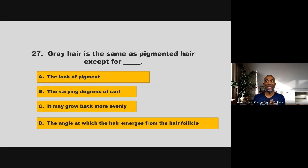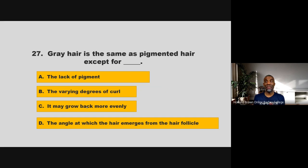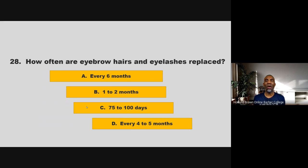Gray hair is the same as pigmented hair except for blank. Is it the lack of pigment, the varying degrees of curl, it may grow back more evenly, or the angle at which the hair emerges from the follicle? If you chose A, the lack of pigment, you are correct.